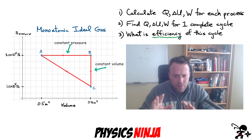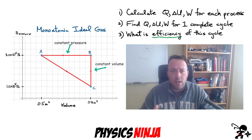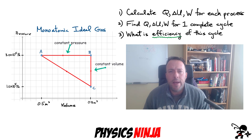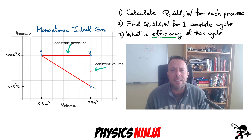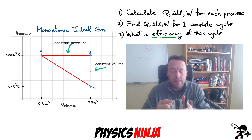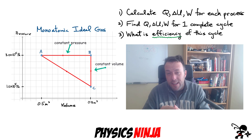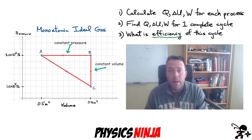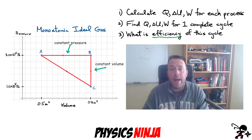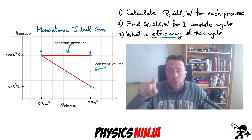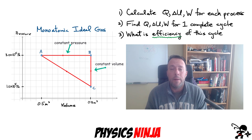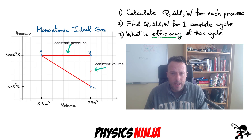This is a different type of process — not like the Carnot cycle which had different shapes for these lines. For each of these processes, we want to calculate the change in internal energy of the gas, the heat that's either been put in or taken out of the system, and the work done by the gas. We want to do that for each process and for the complete cycle, and at the end calculate the efficiency of this cycle.